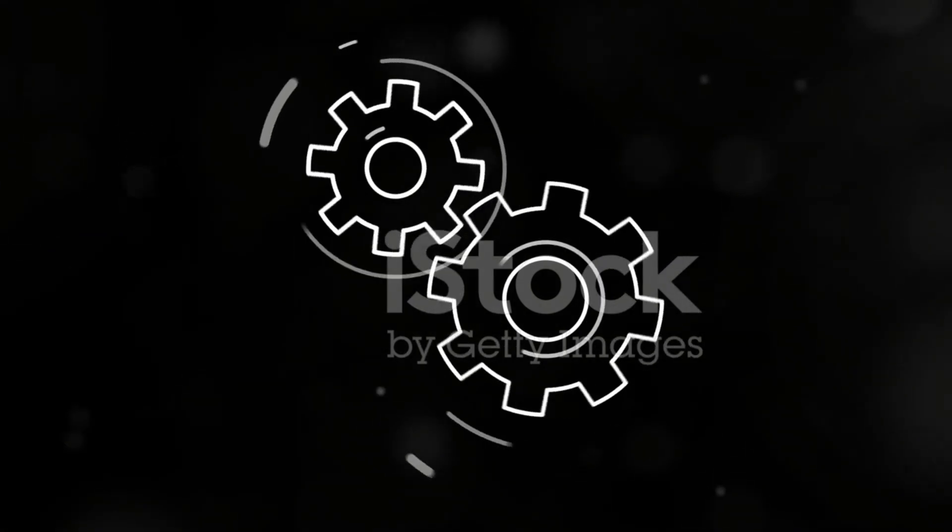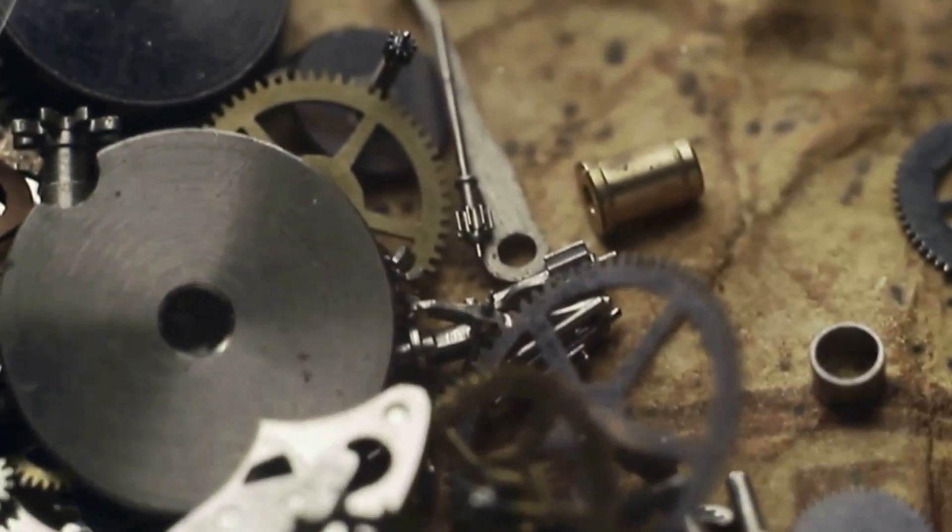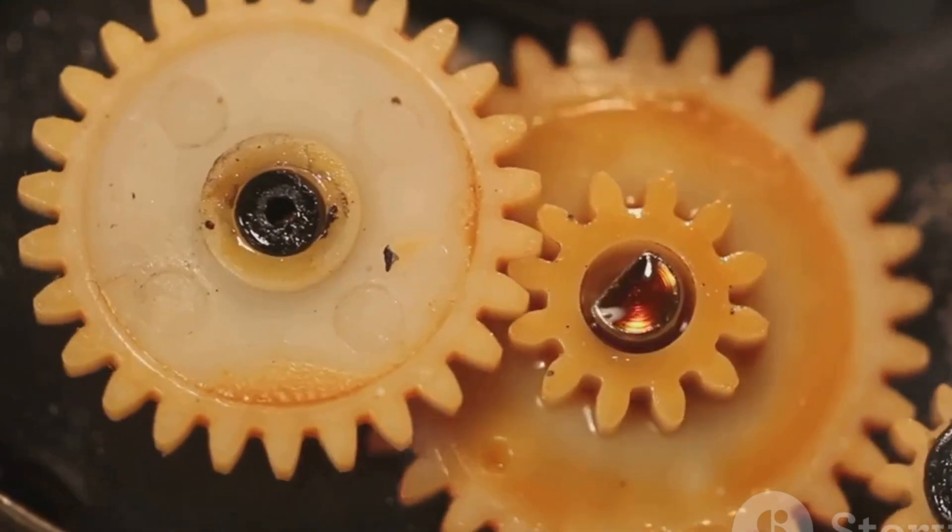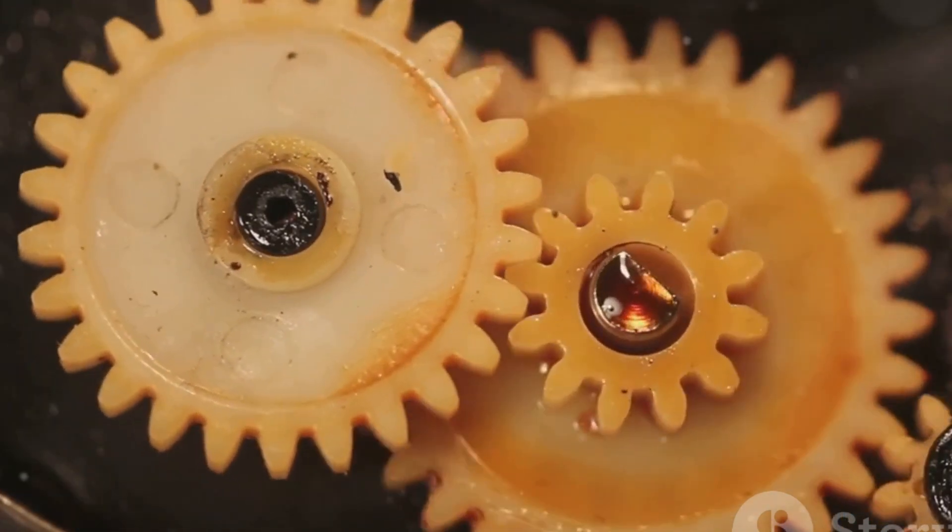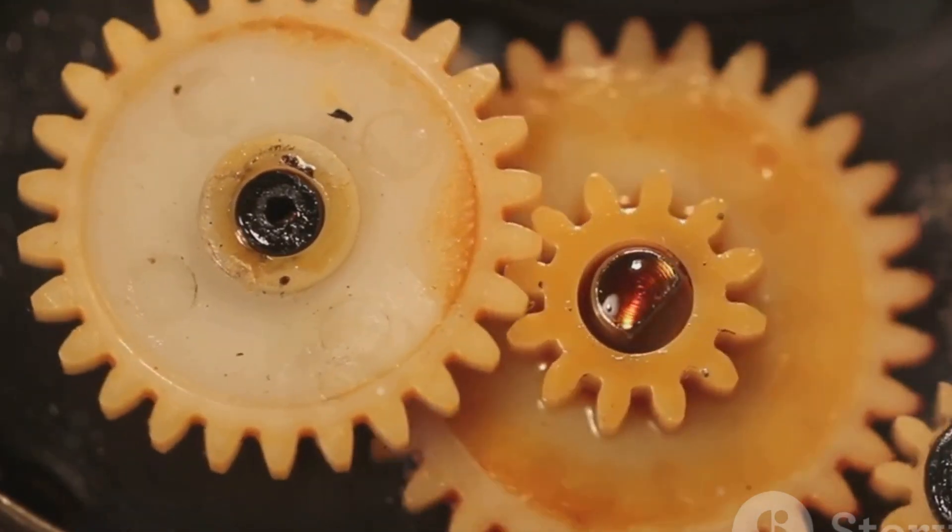Next, we delve into the world of gears. Gears are toothed wheels that interlock to transmit power from one part of a machine to another. The size and number of teeth determine the gear ratio, which in turn affects speed and torque. Larger gears with more teeth turn slower, but provide more torque or rotational force.